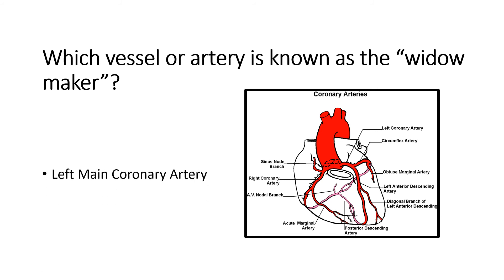The answer is the left main coronary artery. The left ventricle is the main part that contributes to cardiac output, and it is supplied by the left main coronary artery, which divides into the left anterior descending artery and the left circumflex artery. If the left main coronary artery gets blocked, the major portion of the ventricle that contributes to contraction gets infarcted — that is why it is known as the widow maker.